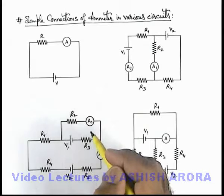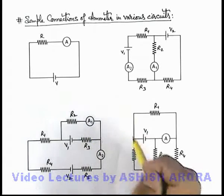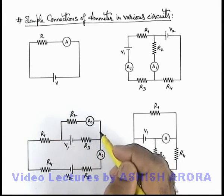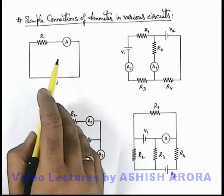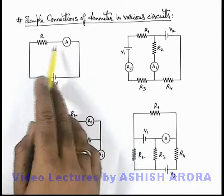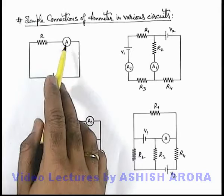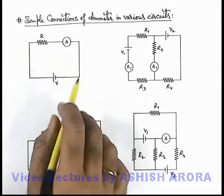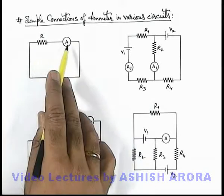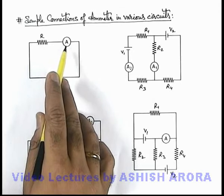Here you can see four different types of circuits which will give you a fair enough idea about how an ammeter can be connected. In this first figure, ammeter is connected in series with the resistance and it is going to measure the current flowing in the whole circuit because there is only one loop and whatever current will pass through it, the current will be measured.